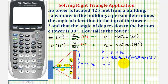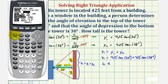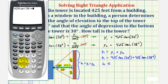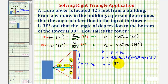Now we'll go to the calculator to get an approximate height. First, check that the calculator is in degree mode since our angles are in degrees — press the mode key, go down to the third row, highlight degree, press enter, then go back to the home screen by pressing second mode for quit. Then enter 425 tangent 30 plus 425 tangent 38 degrees and press enter. Rounding to two decimal places, the approximate height is 577.42 feet. I hope you found this helpful.